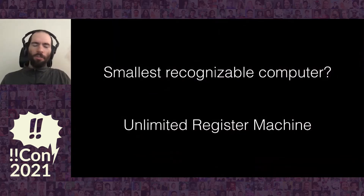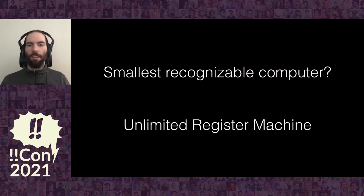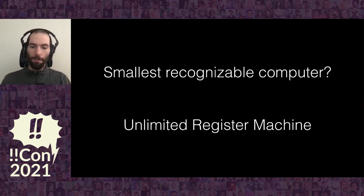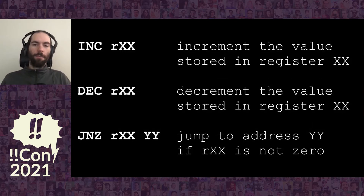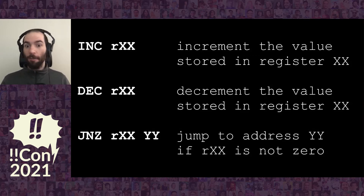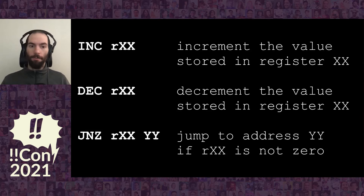Most computers today are built with something like billions of transistors — some are bordering on trillions. But the smallest recognizable computer, using as few logic gates as possible, is probably the unlimited register machine. The way it works is it's a computer with three instructions: you can increment a value stored at a register, decrement a value stored at a register, or test if a register is equal to zero, and if it's not, jump to a given address. It turns out this is enough to perform arbitrary Turing-complete computation.